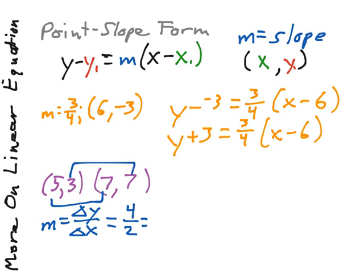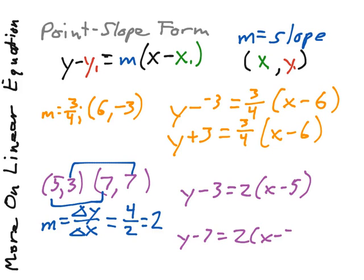We simplify our fraction, and we have a slope of 2. So now, we have two different ways of writing this equation, because we have two points that are given. We can go y - 3 = 2(x - 5), or we can say y - 7 = 2(x - 7).